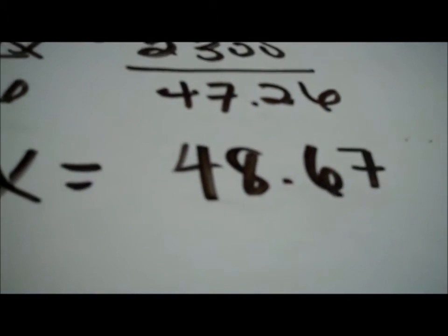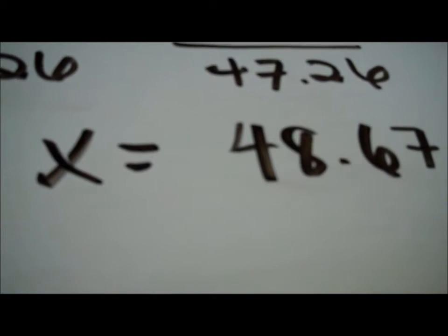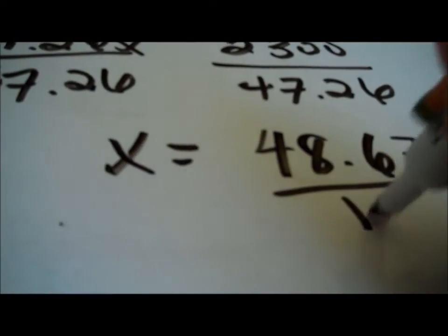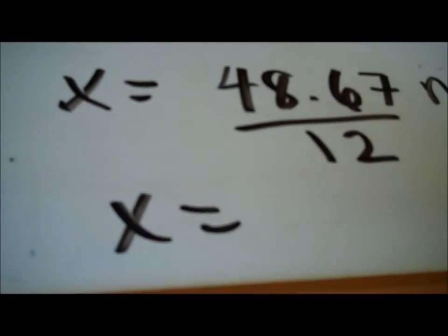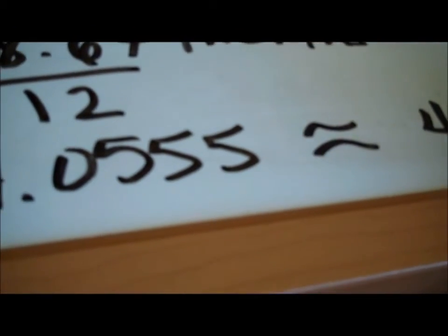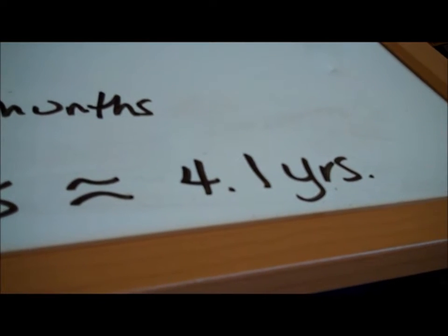I'd suggest leaving that in your calculator, but if you write it down you can write 48.67. This represents months, but I wanted years. To get years I need to divide by 12 — there are 12 months in a year. When I divide 48.67 by 12 I get approximately 4.0555, which I would round to 4.1 years.